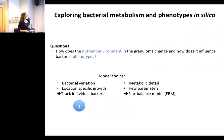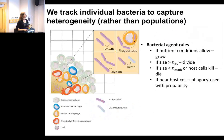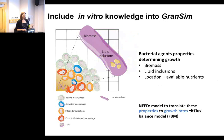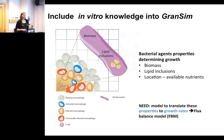Tracking individual bacteria: we build bacteria as agents and define their rules. If nutrient conditions are good enough, you get bigger. If size exceeds a division threshold, it becomes two bacteria. If it falls below a death threshold, it dies. If near a host cell, it can be phagocytosed with a certain probability. We give bacterial agents properties like biomass to track size, and track how much lipid inclusions they have, since these can act as carbon sources under carbon-starved conditions. The flux balance model translates these properties into growth rates.